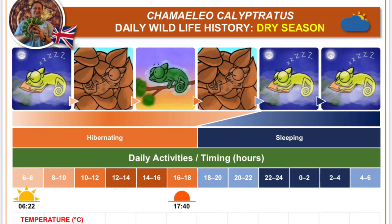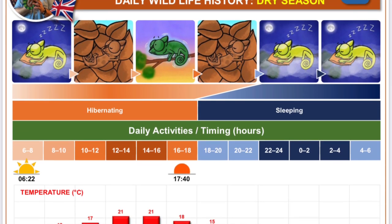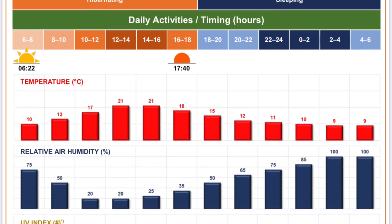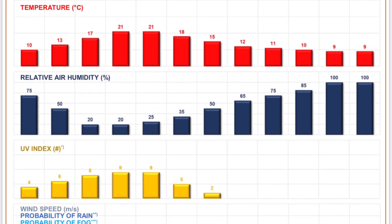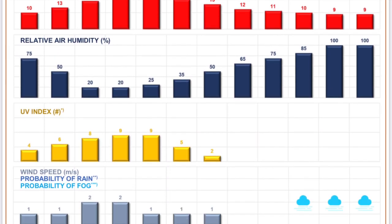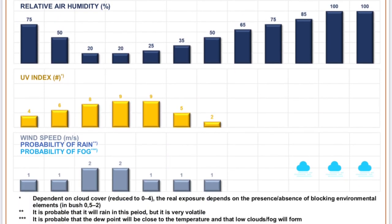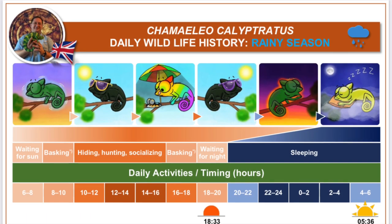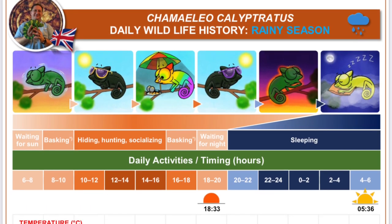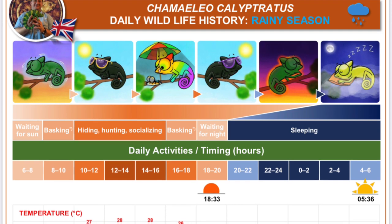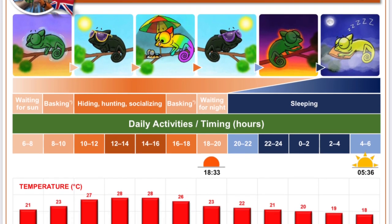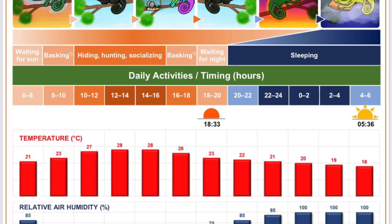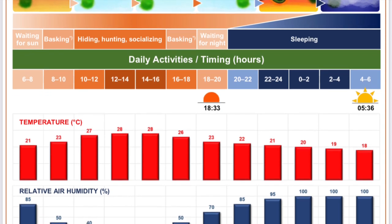The daily wildlife history, rainy season, depicts the typical daily climatic cycle of the rainy season in many environmental factors. The daily wildlife history, dry season, depicts the typical daily climatic cycle of the dry season in many environmental factors.